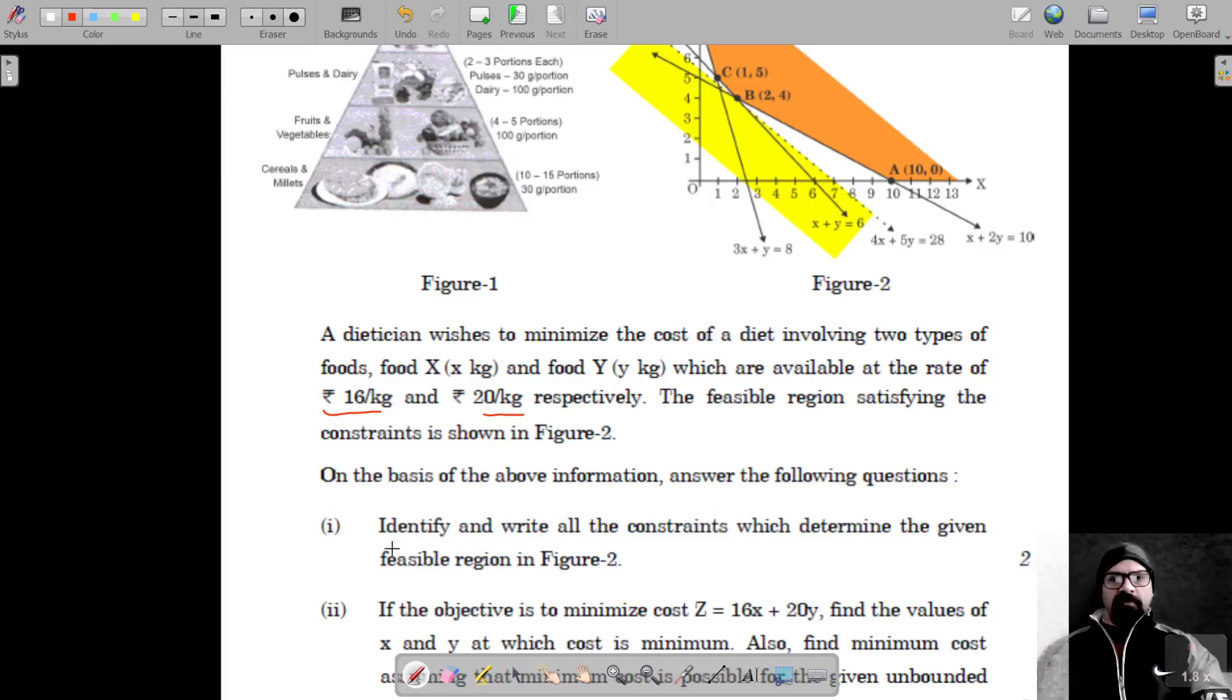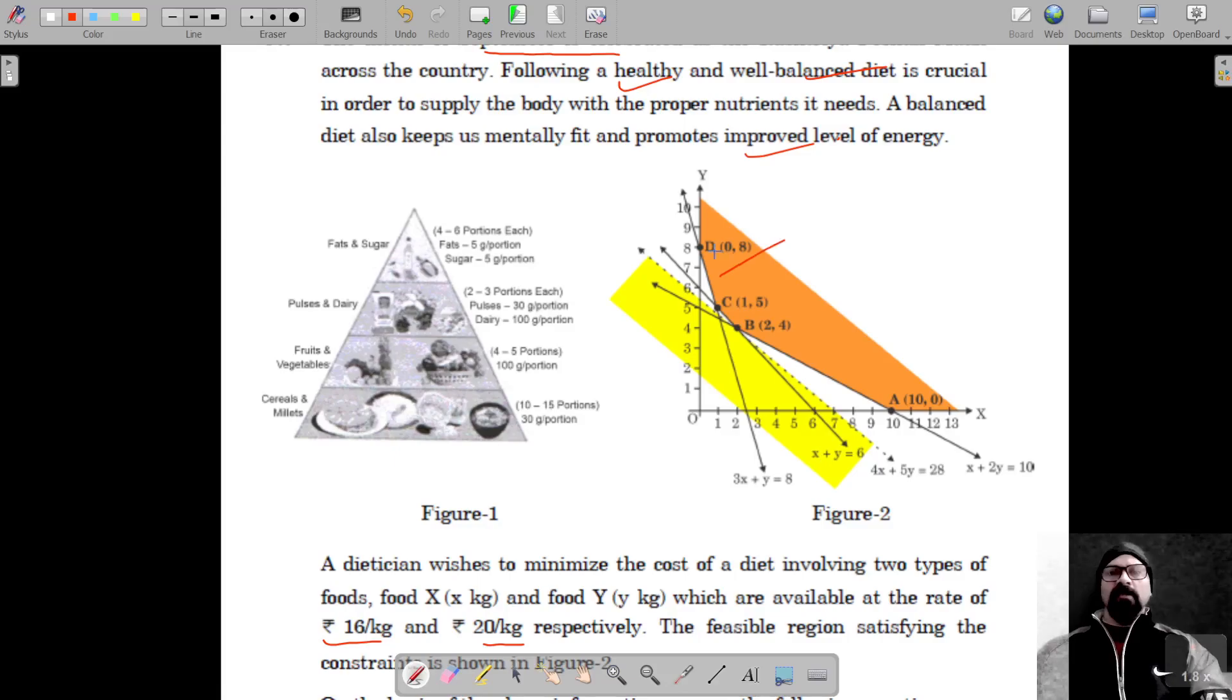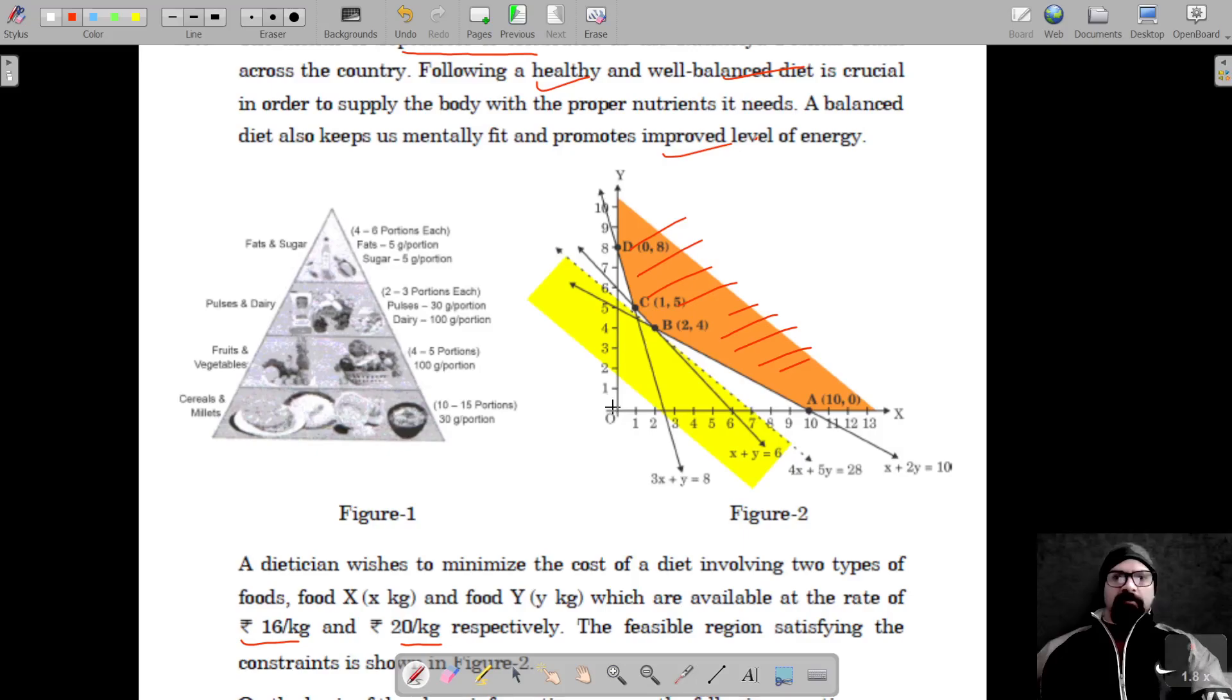Identify and write all the constraints that determine the feasible region. So this is our feasible region which is unbounded, and because it's not towards the origin, that means the given constraints should not satisfy (0, 0) and should be greater than or equal to.